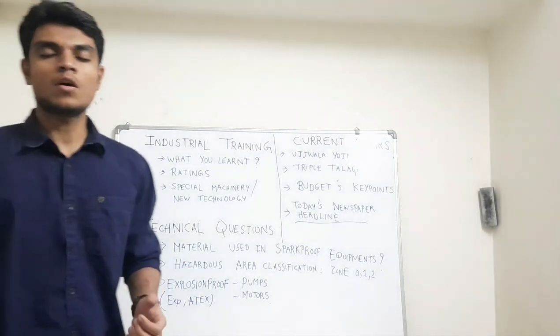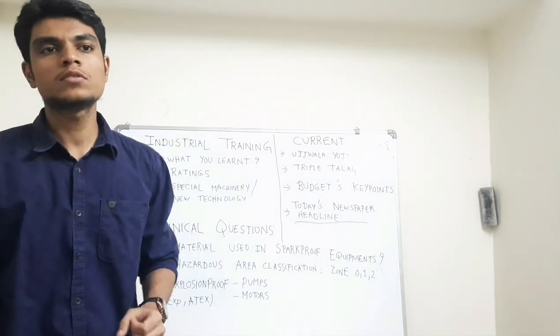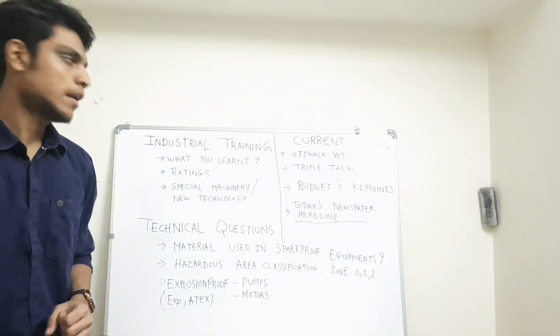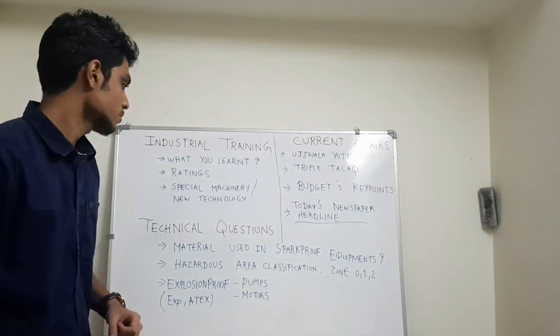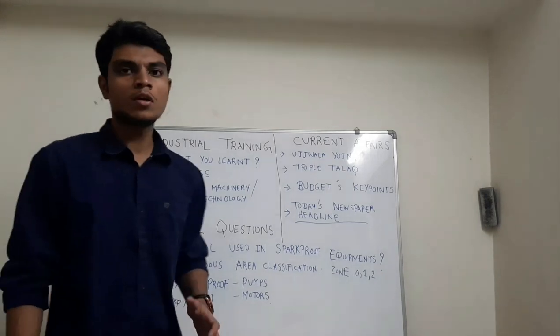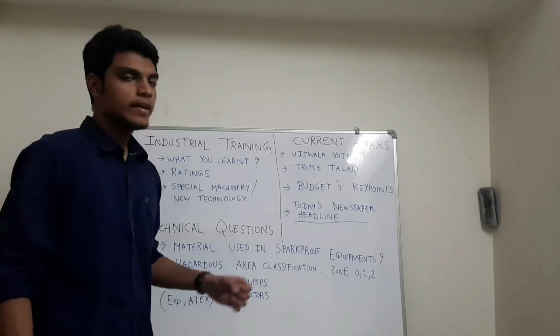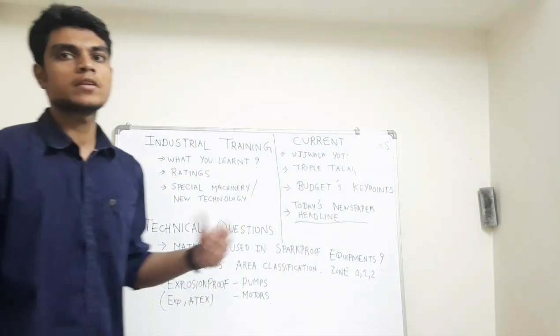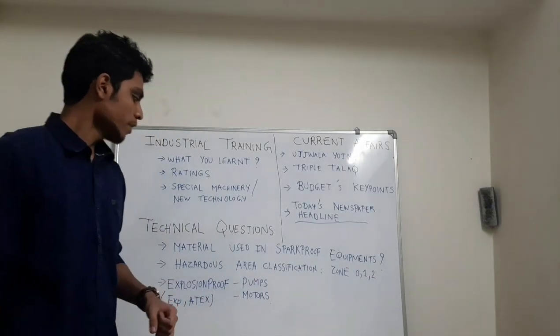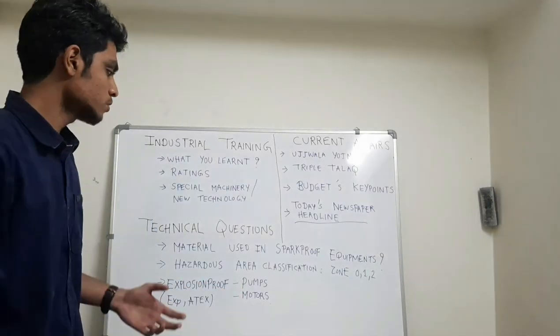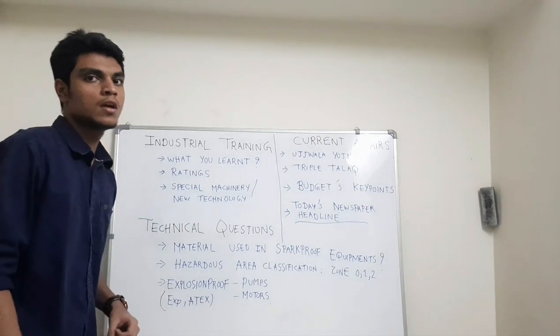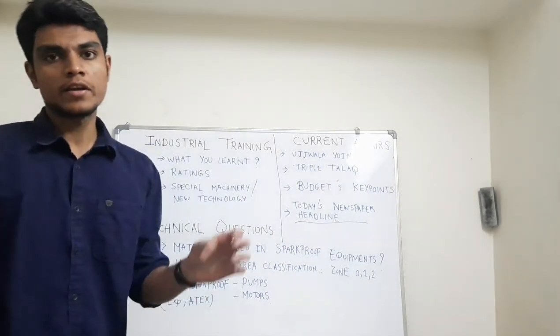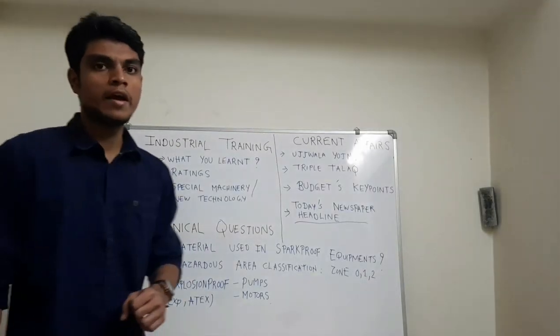In technical questions, as all of you have cracked gate, so the technical questions were bit easy for all of us. But some typical questions which are out of the syllabus of gate were like materials used in spark proof equipment, hazardous area classification, zone 0, zone 1, zone 2. This hazardous area depends on the amount of time for which the ignitable materials or flammable materials are present in the atmosphere. Explosion proof motors, pumps. How they differ from normal motors or pumps? For mechanical they were asking explosion proof pumps, compressor and for electrical it was explosion proof motors. They are indexed by EXP or ATEX written on the machineries, explosion proof machineries or explosion proof motors.